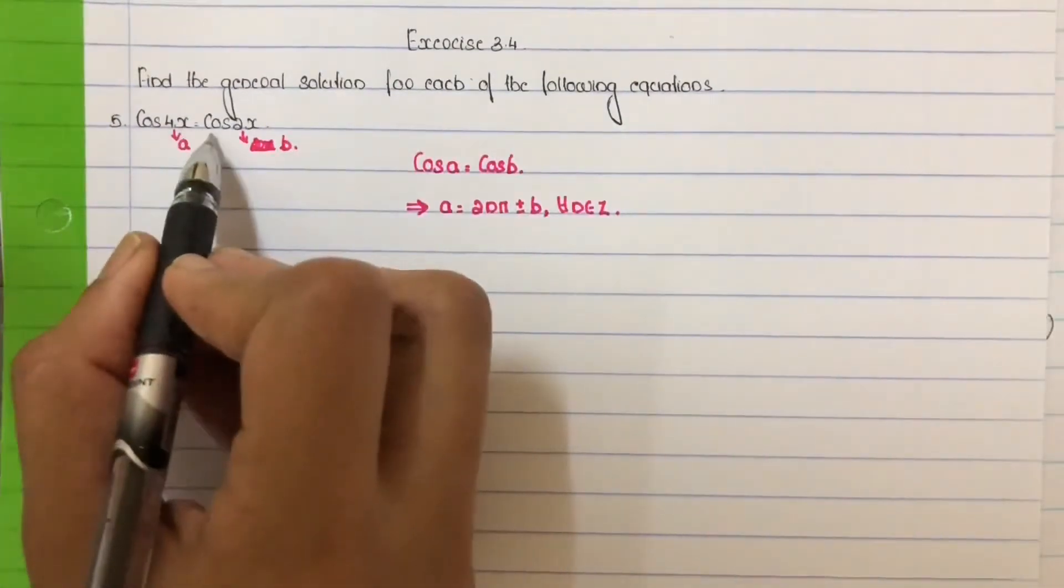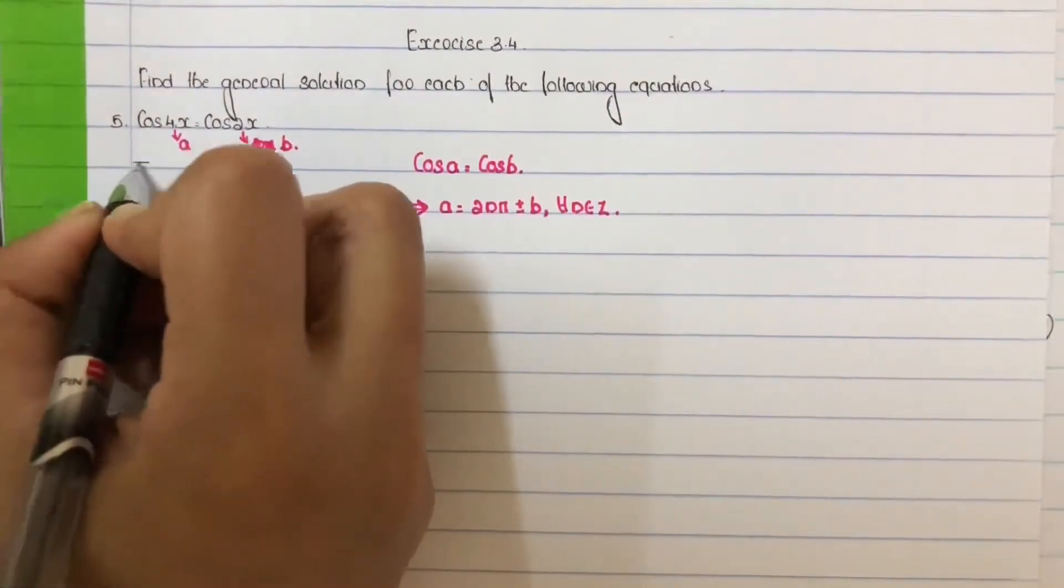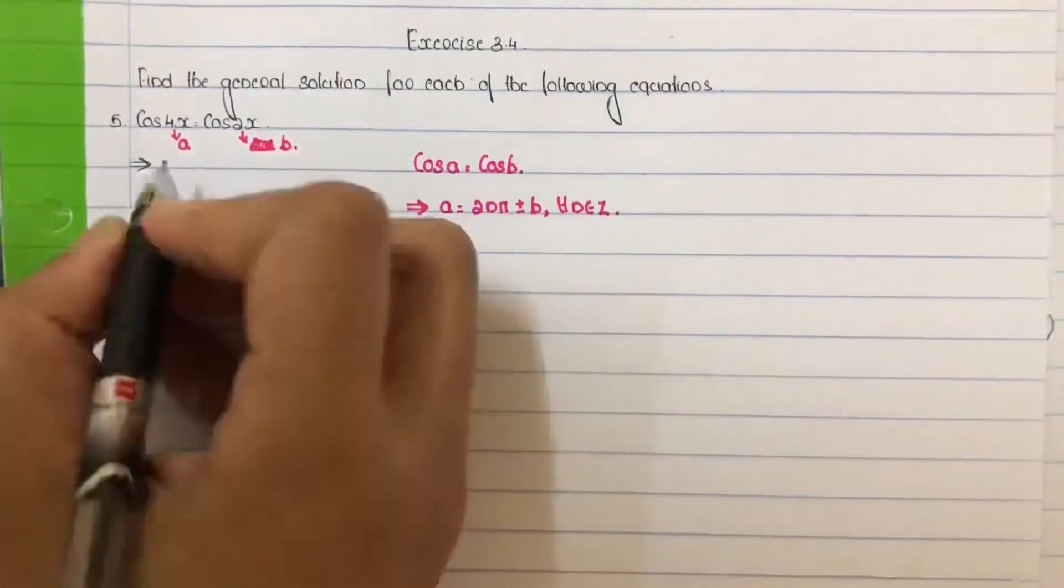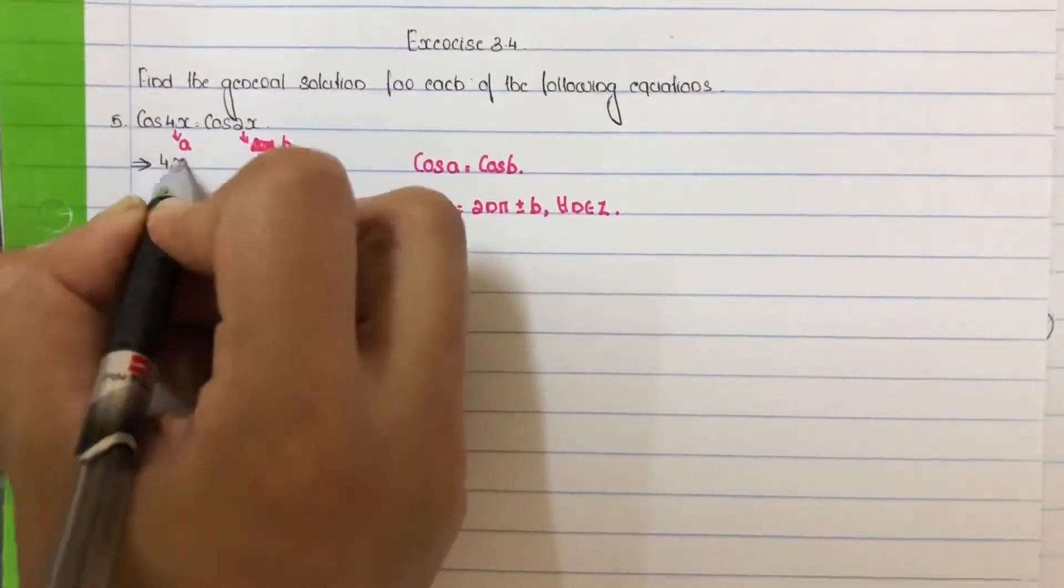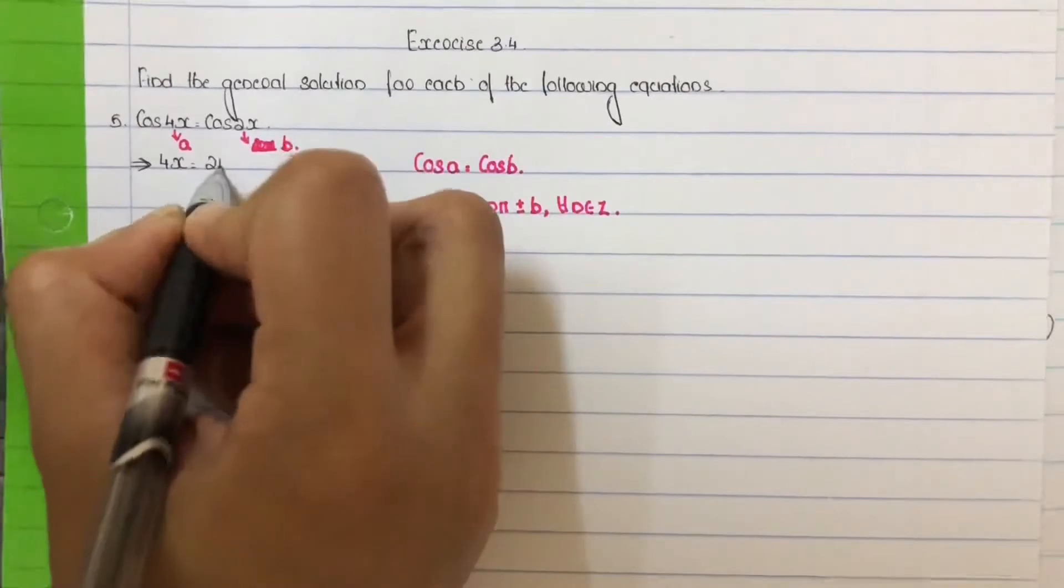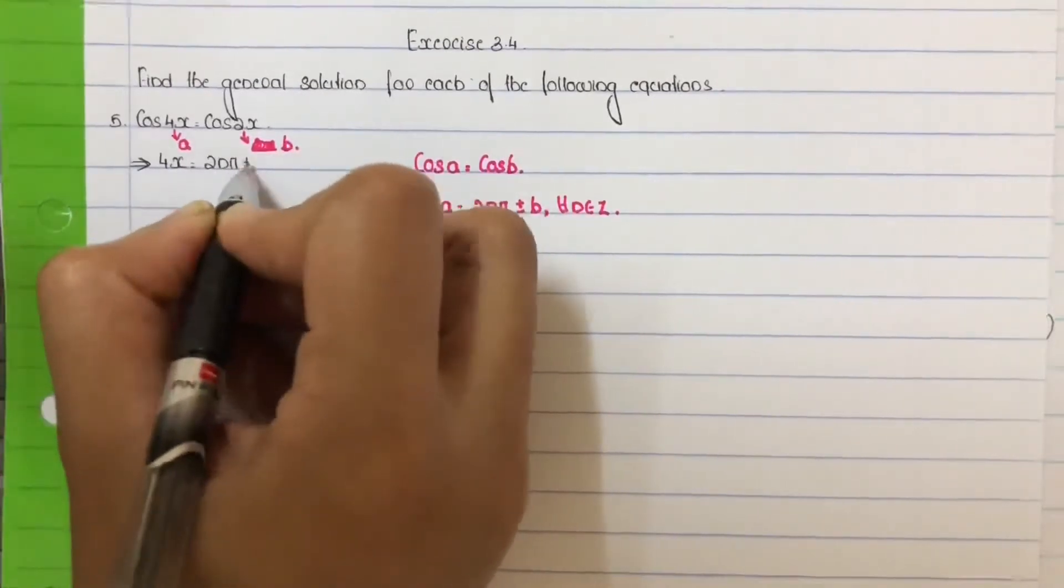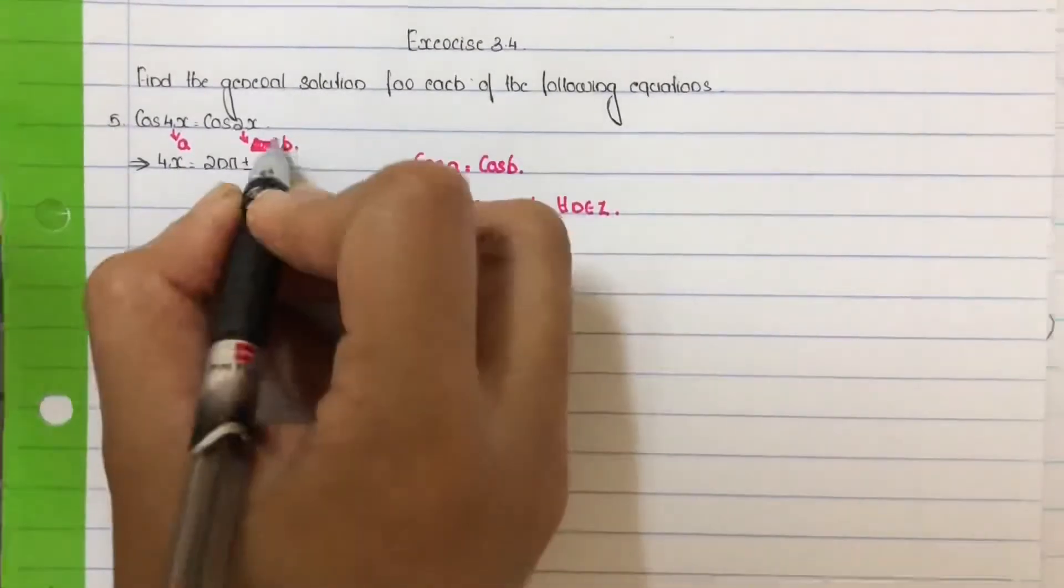Cos 4x equal to cos 2x implies 4x equal to 2nπ plus or minus b, where b equal to 2x, for all n belongs to integers.